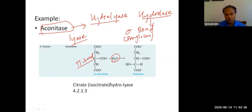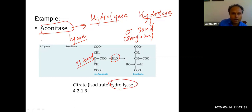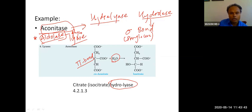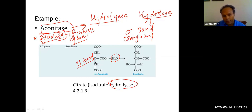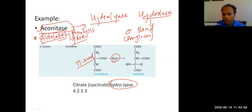Remember: when a double bond is broken using water, it is a lyase. When a single bond is broken using water, it is a hydrolase. A second important example is aldolase, a lyase you will see in glycolysis. Aconitase in the citric acid cycle is also a lyase.